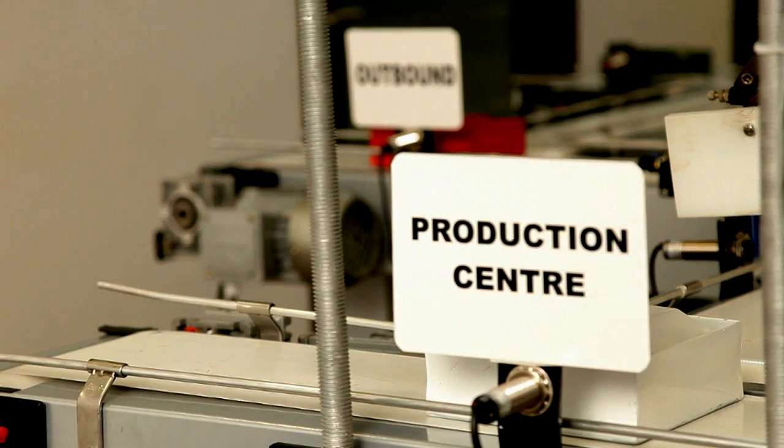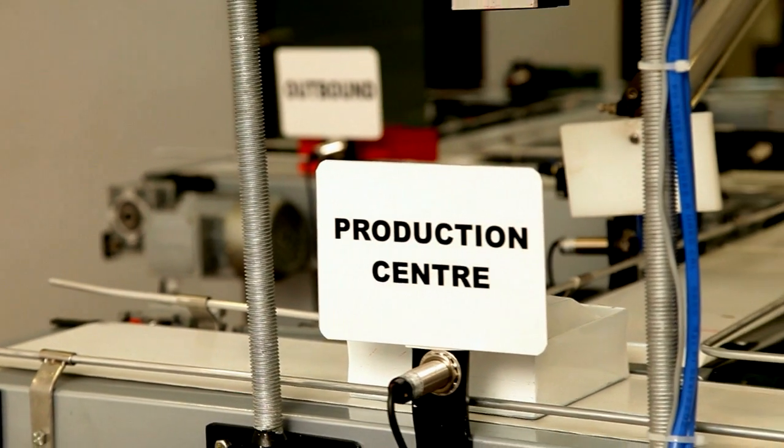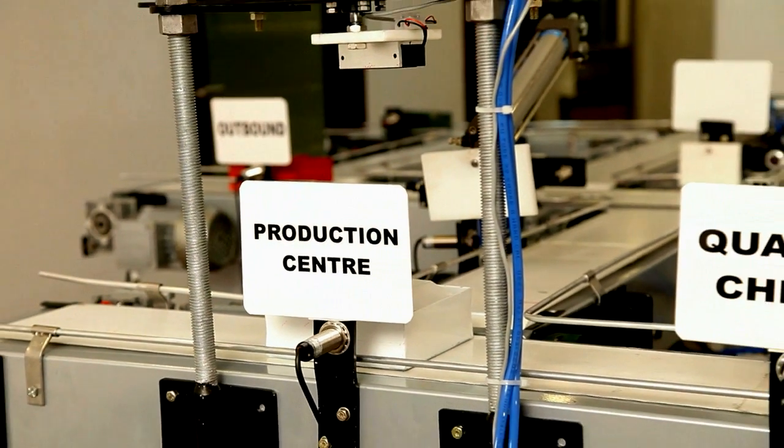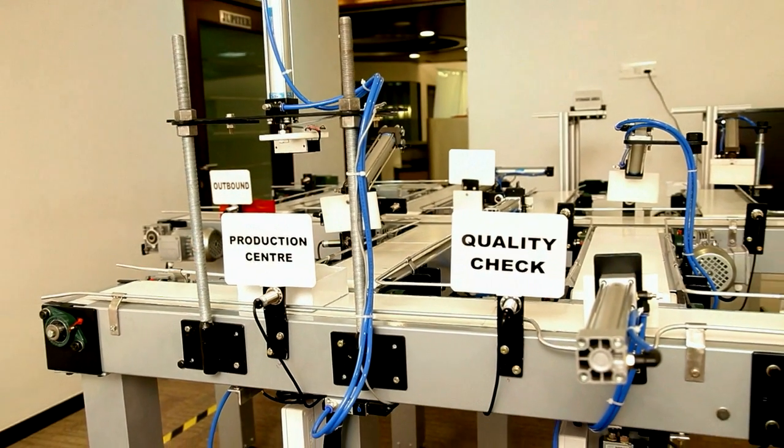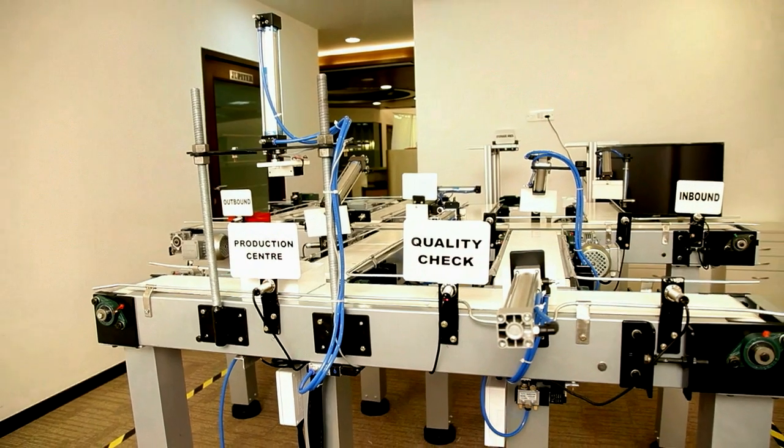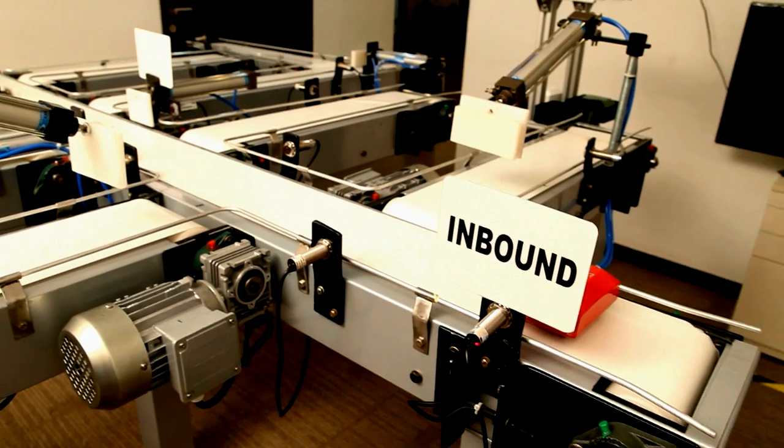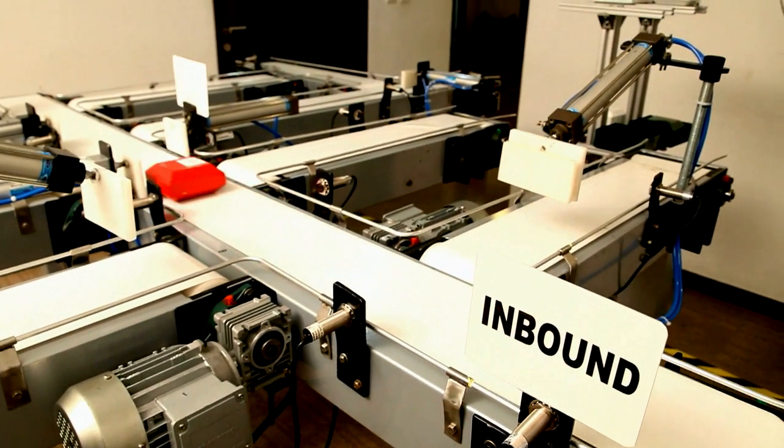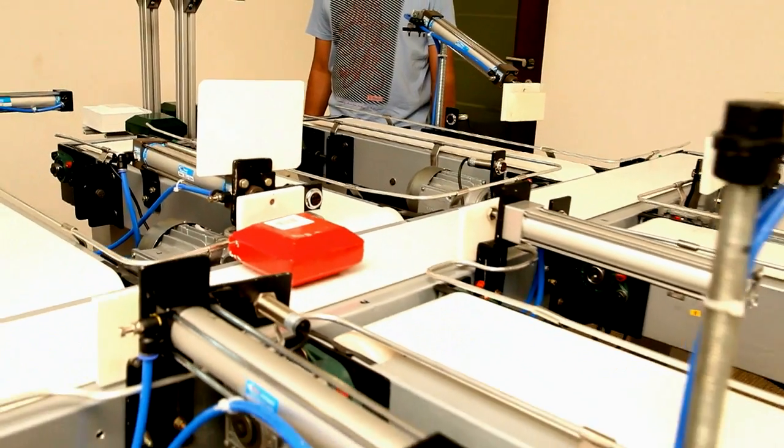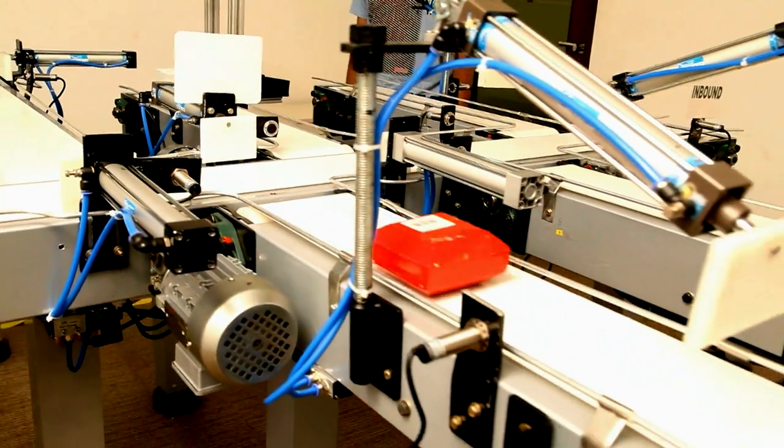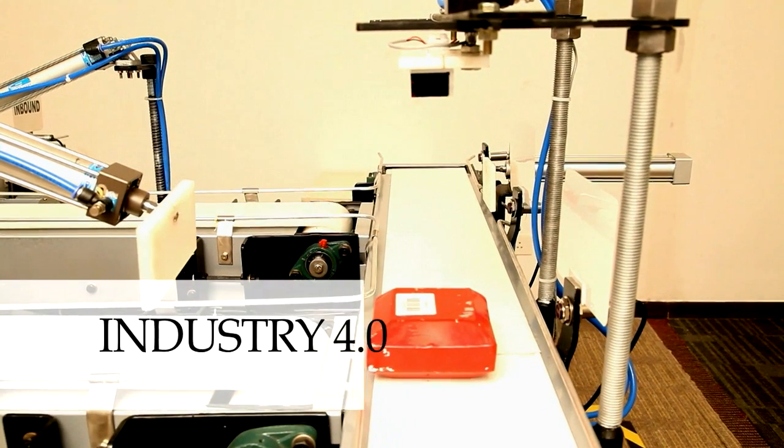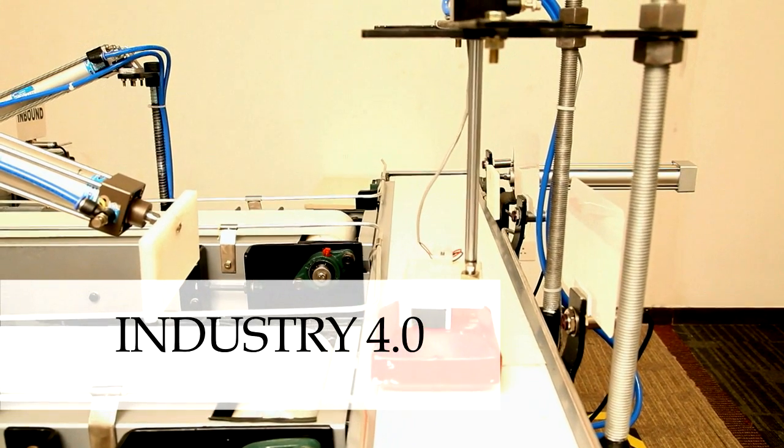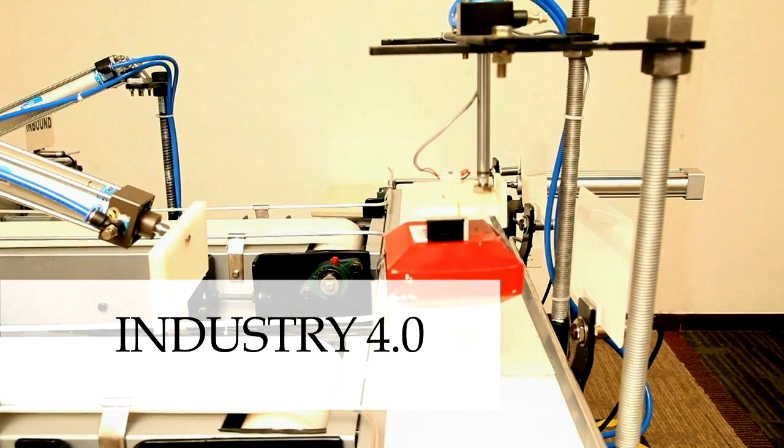In future manufacturing, the production process would involve communication between products and machines. Products will find their way in the manufacturing process intelligently by coordinating with machines and other products based on the process requirement. Machines and raw materials will be interconnected with Internet of Things. The vision of Industry 4.0 is to have a highly flexible, individualized, and resource-friendly mass production.